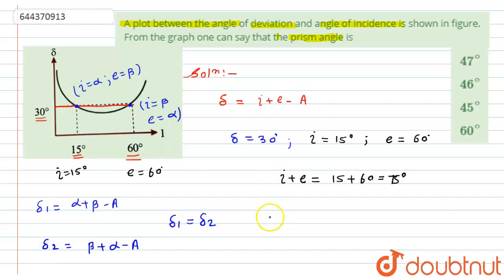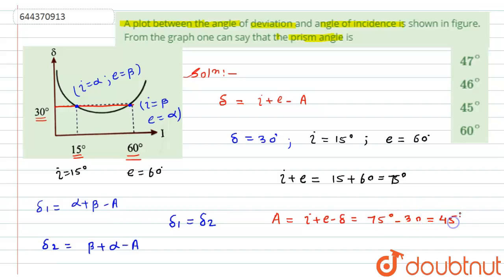Substituting these values into our equation, the angle of prism A equals i plus e minus delta, which equals 75 minus 30 = 45 degrees. So the angle of prism from the graph is 45 degrees. Looking at the given options, option 3 — 45 degrees — is the correct answer.